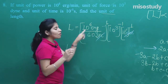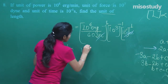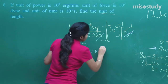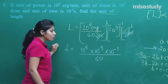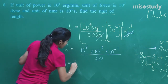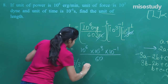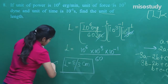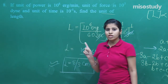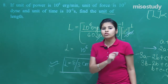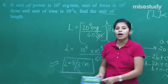When you solve 10⁶ × 10⁻³ × 10⁻¹ / 60, you get approximately 5/3 cm. This was an important question from the application of dimensional analysis. Understanding this type of question requires good knowledge of how to apply dimensions.